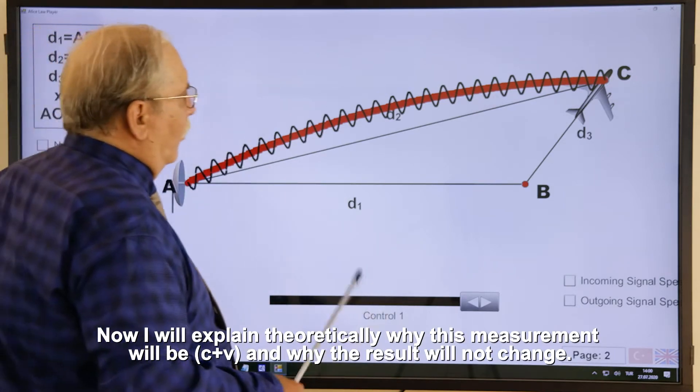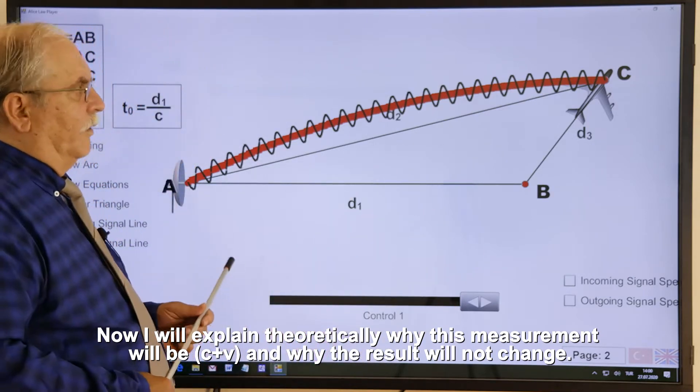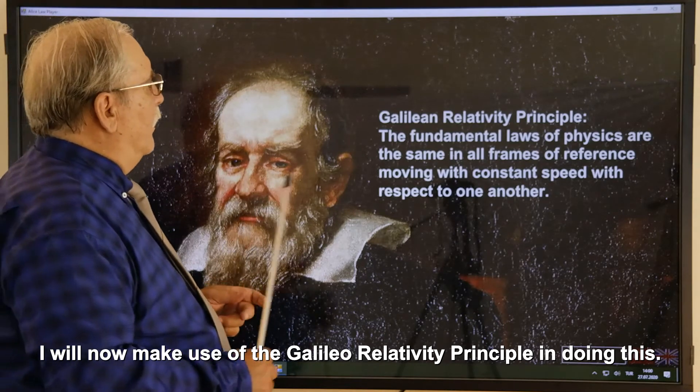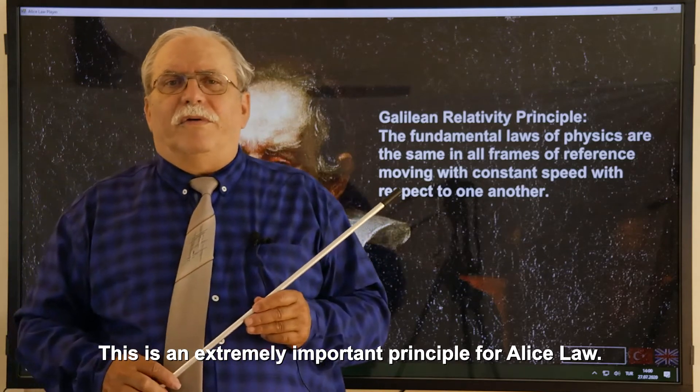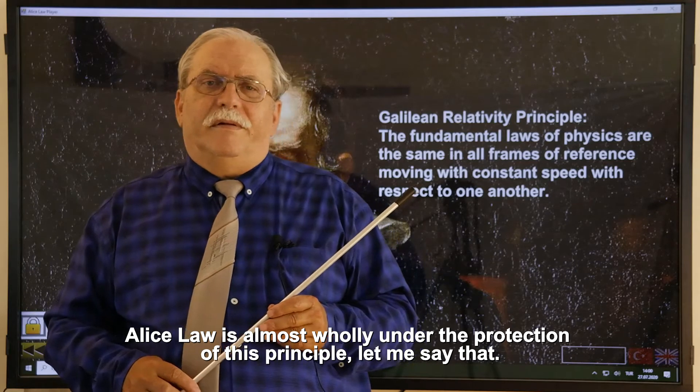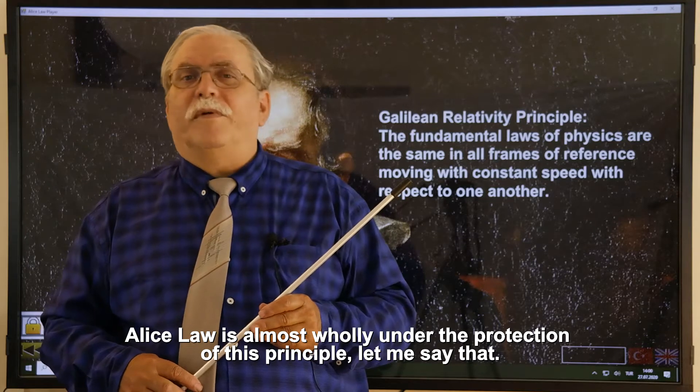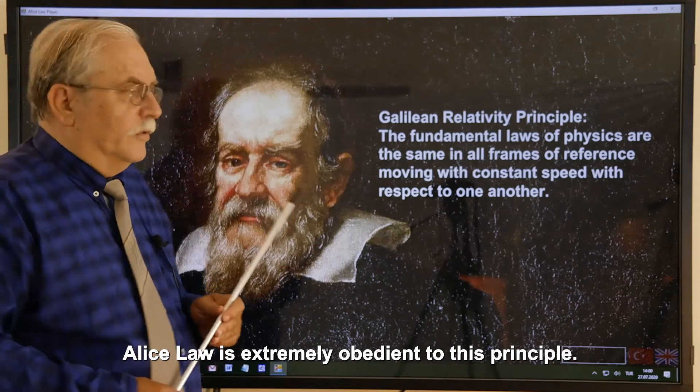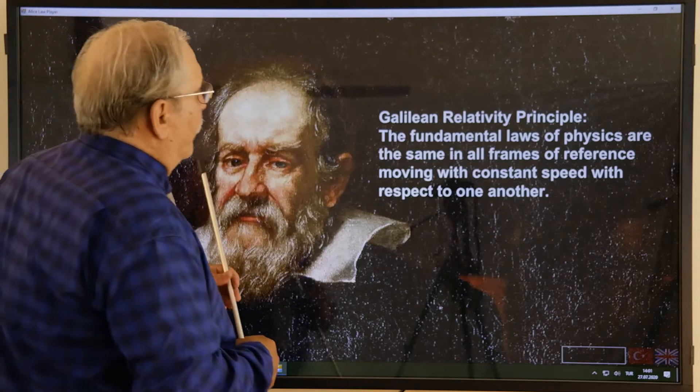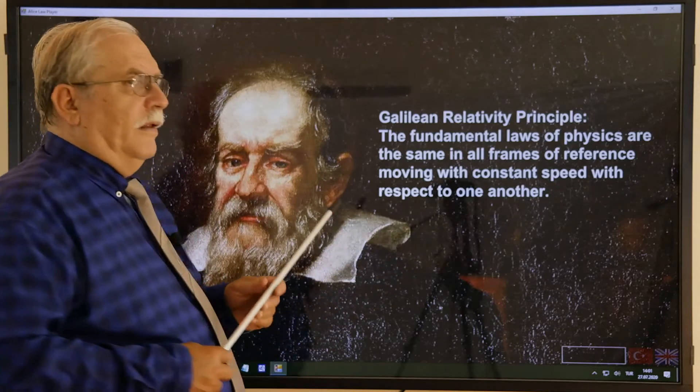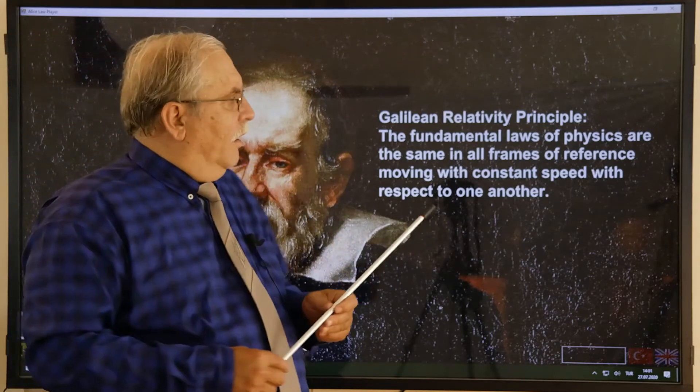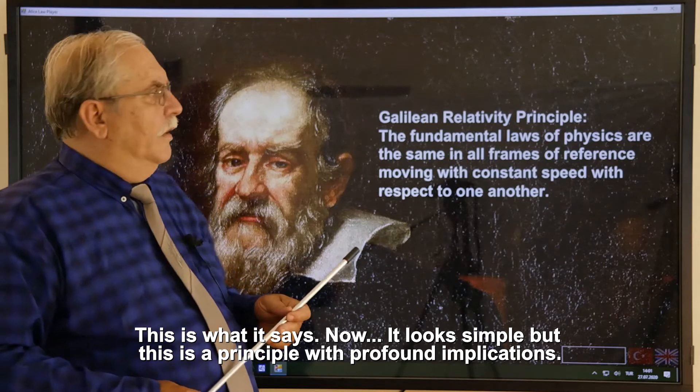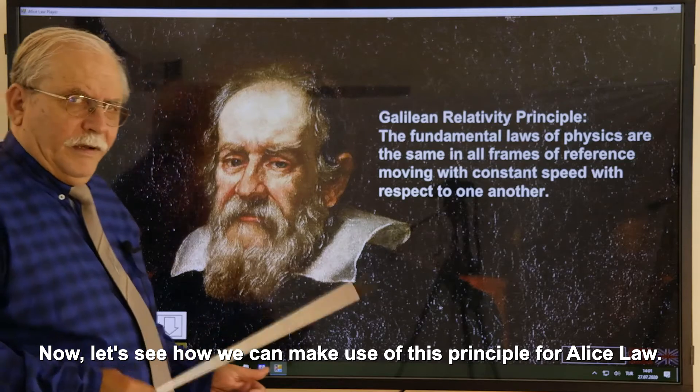Now I will explain theoretically why this measurement will be C plus V and why the result will not change. I will now make use of the Galileo relativity principle in doing this. This is an extremely important principle for Alice Law. Alice Law is almost wholly under the protection of this principle. Alice Law is extremely obedient to this principle. This principle says the fundamental laws of physics are the same in all frames of reference moving with constant speed with respect to one another. This is what it says. Now, it looks simple, but this is a principle with profound implications. Let's see how we can make use of this principle for Alice Law.